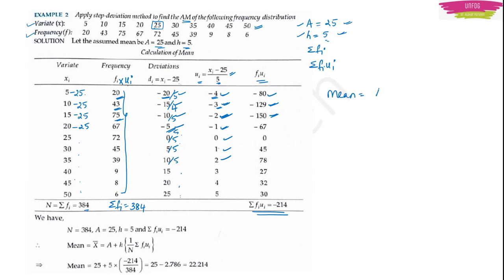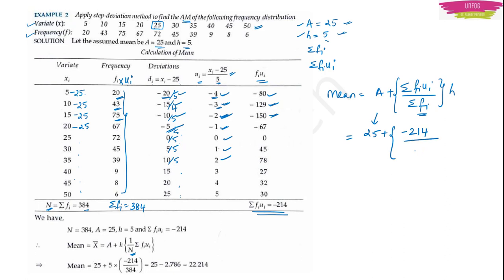After computing all fi·ui values and summing them, summation(fi·ui) = −214. Now apply the formula: mean = A + [summation(fi·ui) / summation(fi)] × h = 25 + (−214 / 384) × 5. Simplifying gives the arithmetic mean. That is how you calculate the arithmetic mean using the step deviation method.